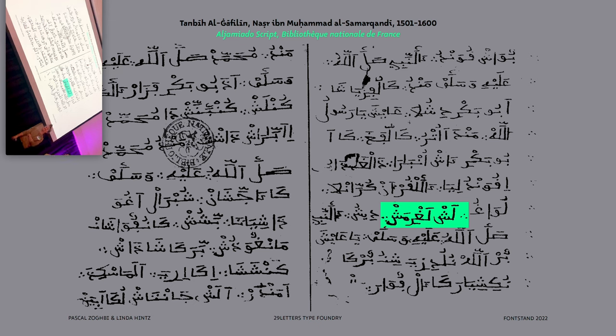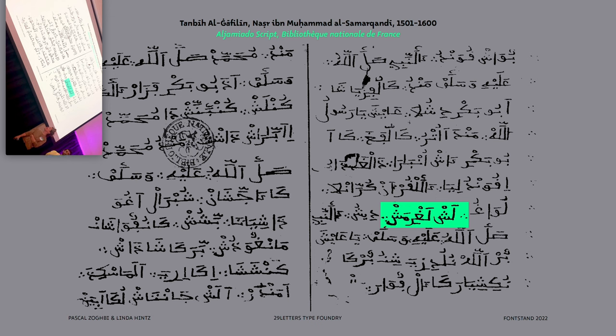But if there's someone who knows Spanish and Arabic, you can read these manuscripts. Because if you read them, they sound like archaic Spanish. These are called Aljamiado, which comes from the word Al-Hajamiya in Arabic.